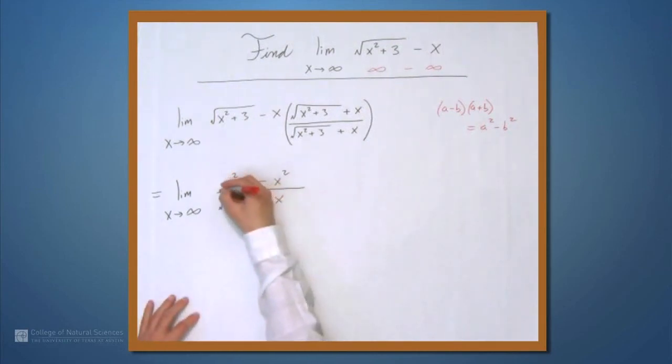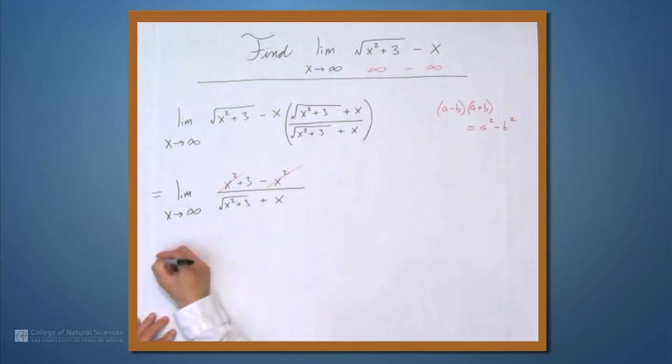In the numerator, these x squareds cancel. So this is the limit as x approaches infinity of 3 over the square root of x squared plus 3 plus x.